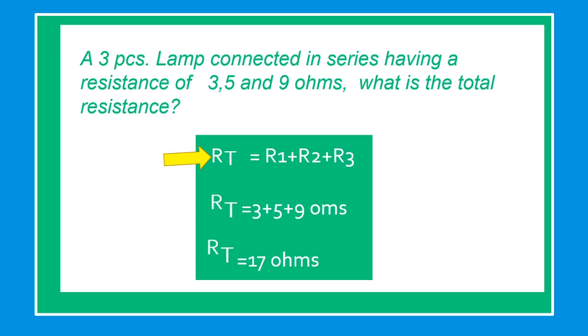Let's read the example of series circuit. Three pieces of lamp connected in series having a resistance of 3, 5, and 9 ohms. What is the total resistance? Using our formula Rt equals R1 plus R2 plus R3. Rt equals 3 plus 5 plus 9. Rt equals 17 ohms.